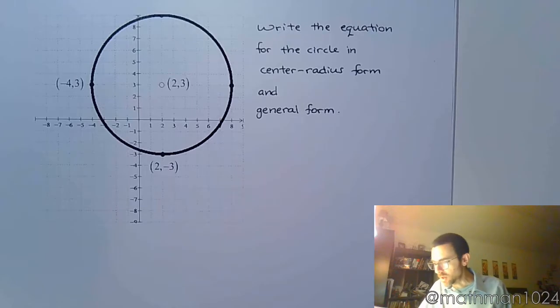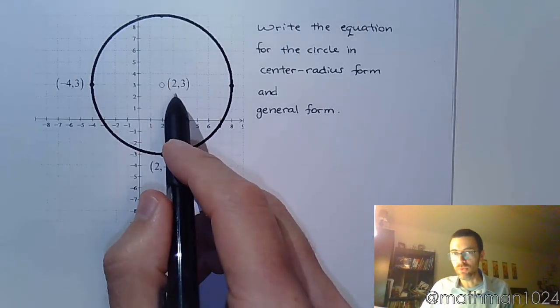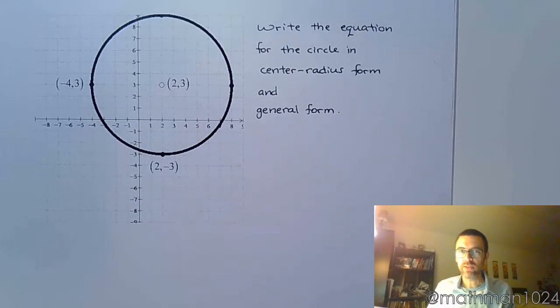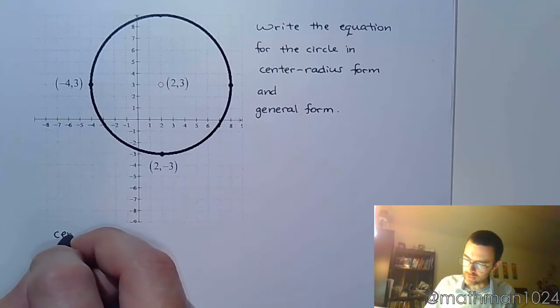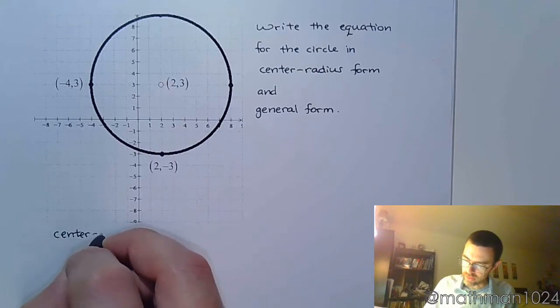Well, from the picture here, we can see that we have a center of (2, 3), so when we're talking about writing this in center-radius form, let's do this underneath. We already have the center.